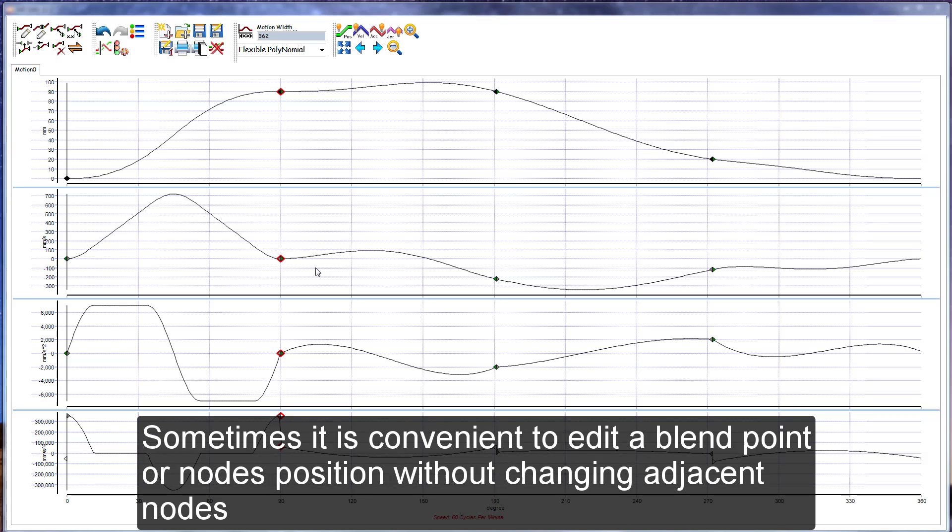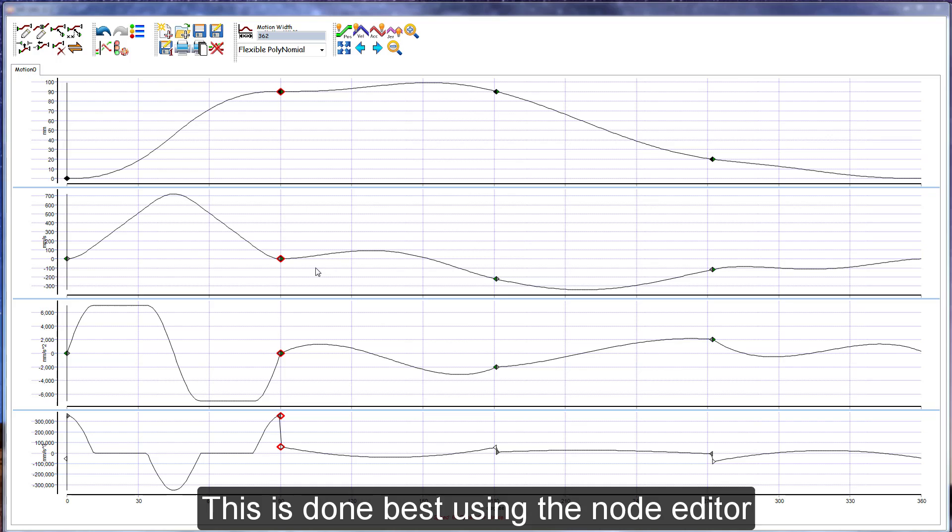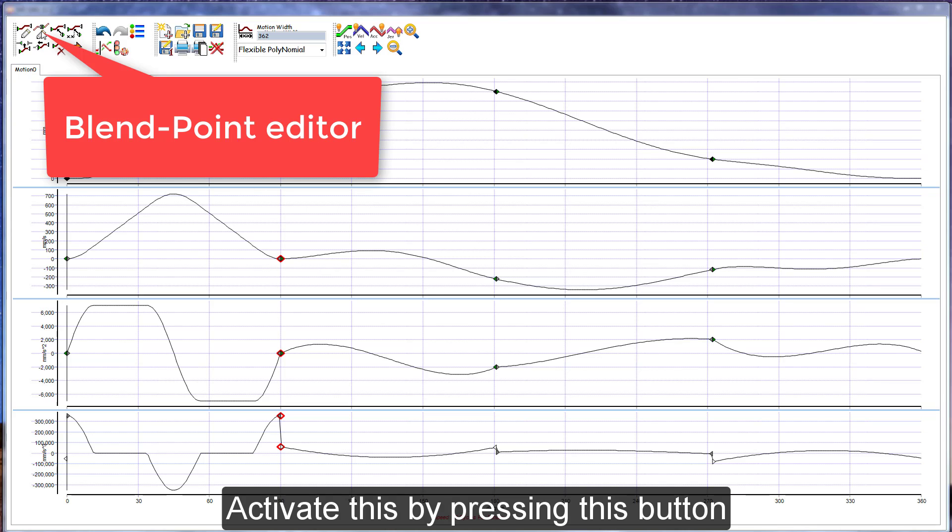Sometimes it is convenient to edit a blend point or node's position without changing adjacent nodes. This is best done using the node editor. Activate this by pressing this button.